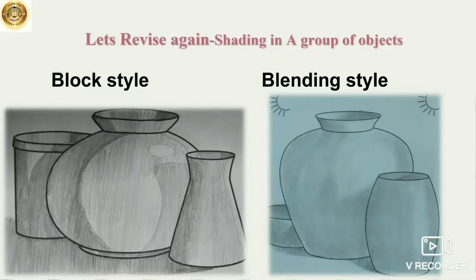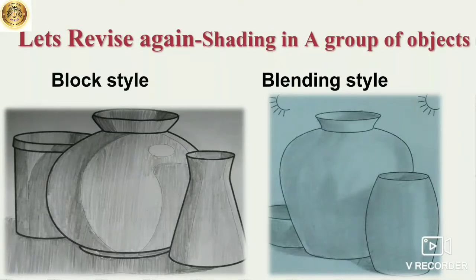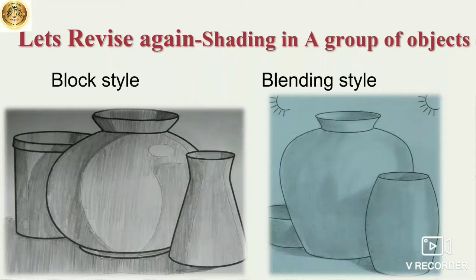Let's revise our chapters on shading in a group of objects. We studied block style where we shaded the given objects using parallel standing lines while creating tones in the presence of a source of light. And then blending style in which we used the crosshatch technique to shade the given objects, creating tones in the presence of light, and then blending it with a cotton ball or tissue paper.